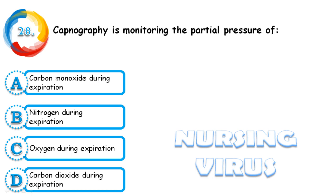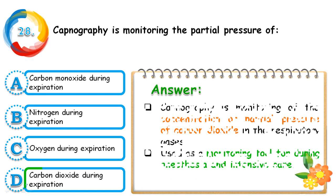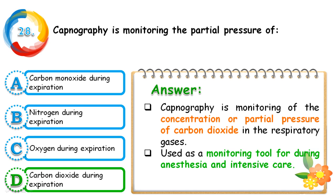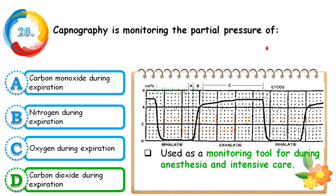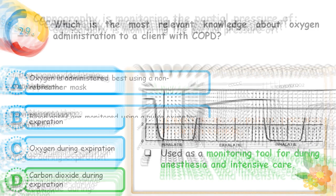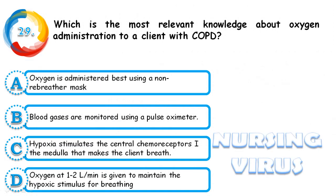Question 28: Capnography is monitoring the partial pressure of which substance in the respiratory gas? Options are carbon monoxide during expiration, nitrogen during expiration, oxygen during expiration, and carbon dioxide during expiration. The correct answer is D — carbon dioxide during expiration. Capnography is the monitoring of the concentration or partial pressure of carbon dioxide in the respiratory gas. It is mainly used as a monitoring tool during anesthesia and in intensive care. The graphical representation is called a capnogram.